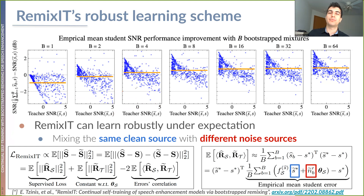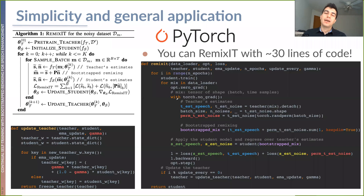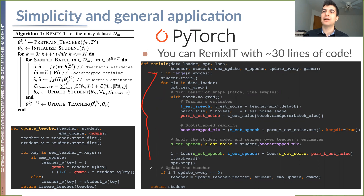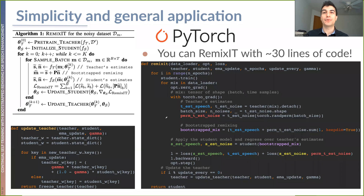A final cool aspect is that you can also implement Remixit in around 30 lines of code, which is shown here. This is a perfectly working PyTorch loop that you can use for your experiments to make your speech enhancement models better if you're interested.